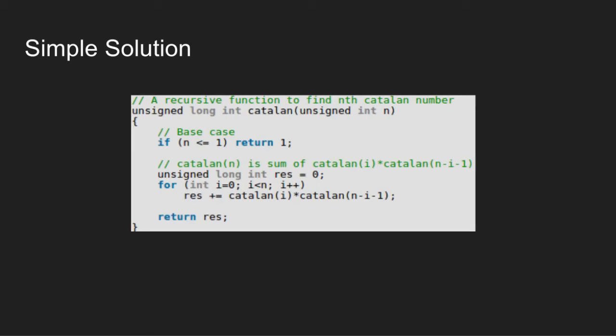This code is the implementation of the recursive formula we discussed. We declare the base case as Catalan of number less than or equal to 1 is 1. Else, for each ith number, recursively keep adding the value of Catalan of i into Catalan of n-i-1 to the res variable. At the end we return res value.